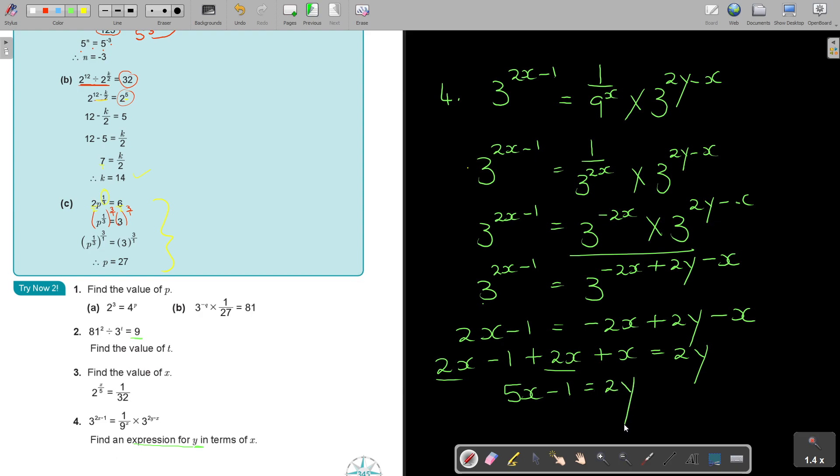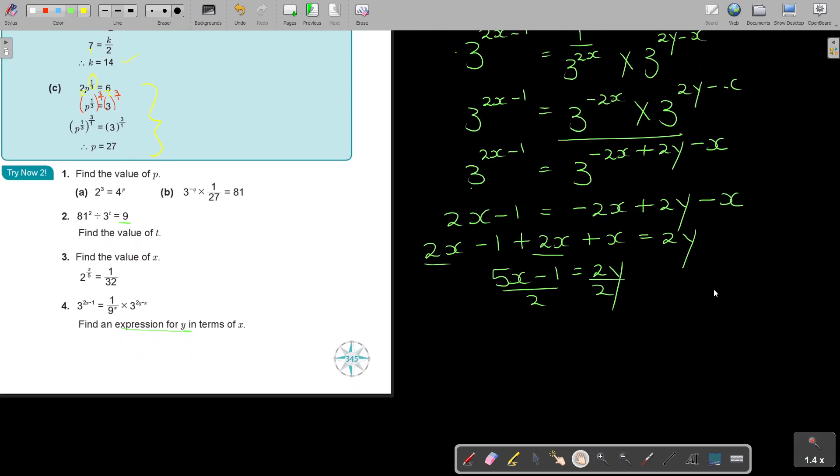Now I want Y alone, the subject, so I divide 2, divide 2. And that's going to be Y. So Y is equal to 5X minus 1 over 2. I reckon this as a difficult one for ordinary level, but you have the technique to do one like this.